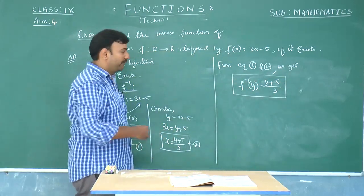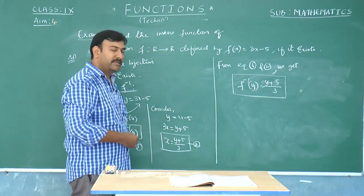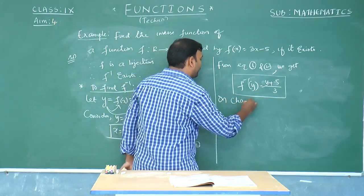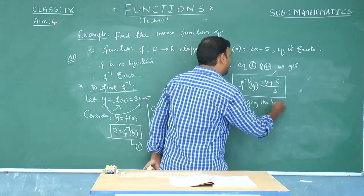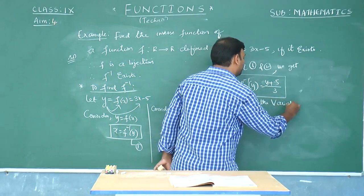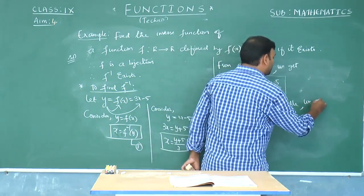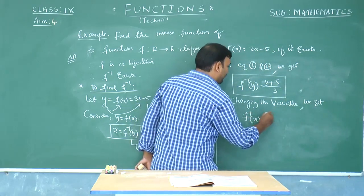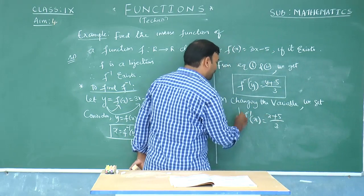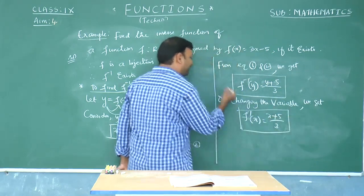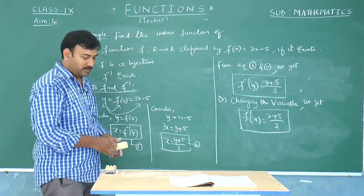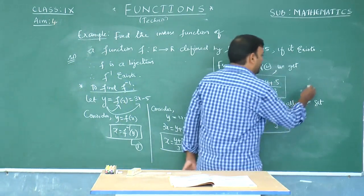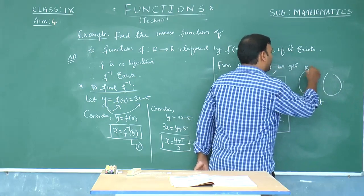Instead of y, if you want to express the function rule in terms of x, we can change the variable. On changing the variable to x, we get f inverse of x = (x + 5)/3. Finally, we have found the rule for f inverse: the rule is (x + 5)/3. This is the rule which helps us get the image under the function f inverse.